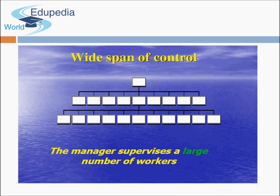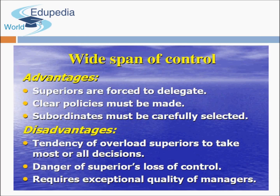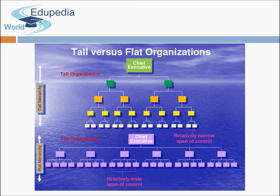A wide span of control occurs when there is decentralization, the manager is capable of handling many people, subordinates are well trained, and the work is repetitive. Advantages include superiors being forced to delegate, clear policies being established, and faster decision-making since decisions don't have to travel through many hierarchy levels. Disadvantages include the risk of supervisor overload and the danger of loss of control, as the manager must be exceptionally capable.